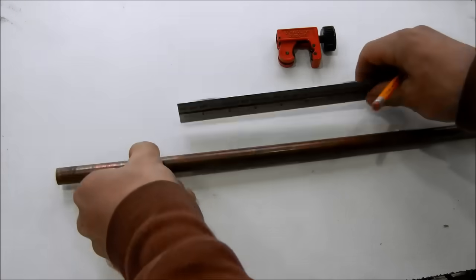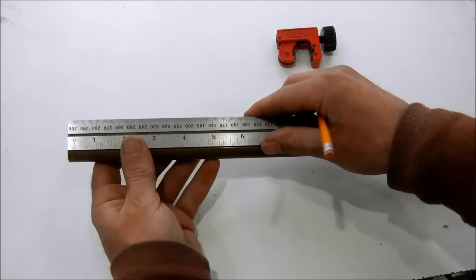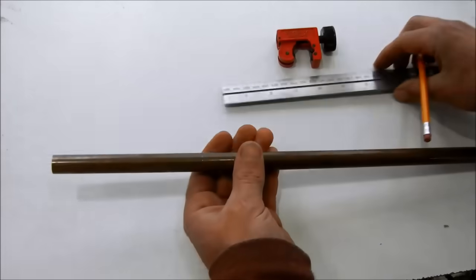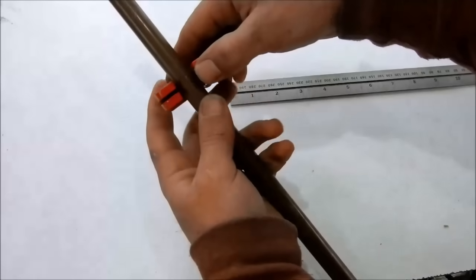Today we are going to be making a fire piston. First thing we need is a piece of copper pipe about five inches long. Cut that off with a pipe cutter.